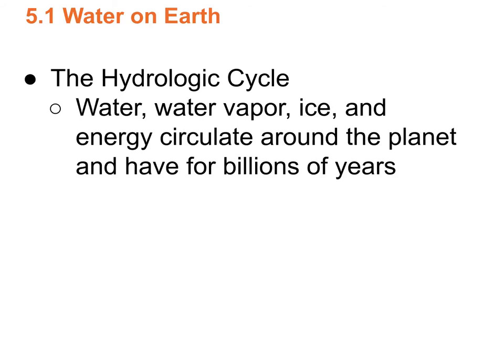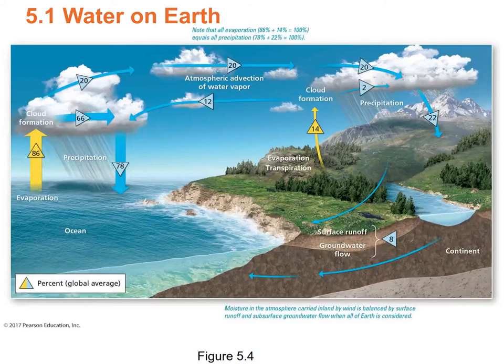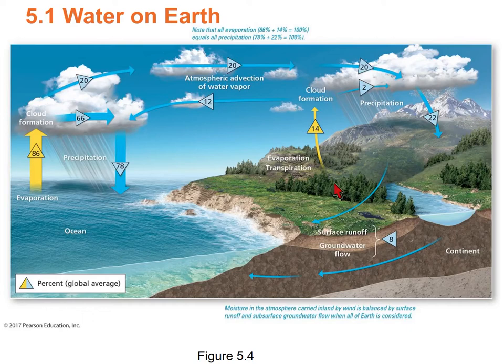Let's talk about the water cycle — the hydrologic cycle. There's water, water vapor, and ice, all circulating around the planet for billions of years. Over the ocean, evaporation takes water into the atmosphere as a gas that condenses and falls as rain. 86% of the evaporation takes place over the ocean, and 78% of the rain falls over the ocean.